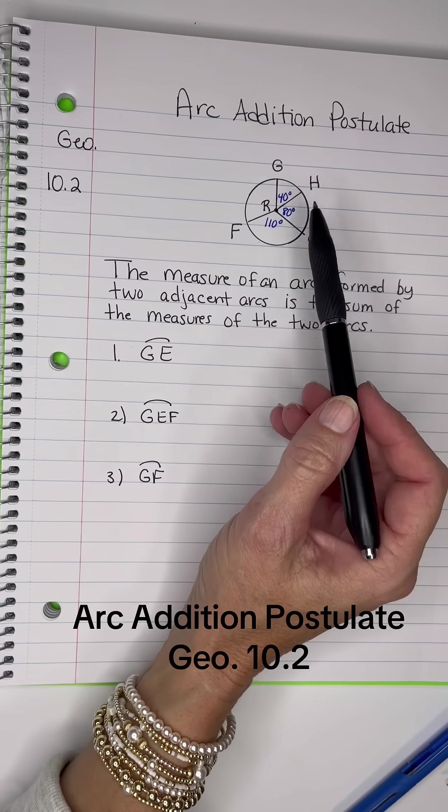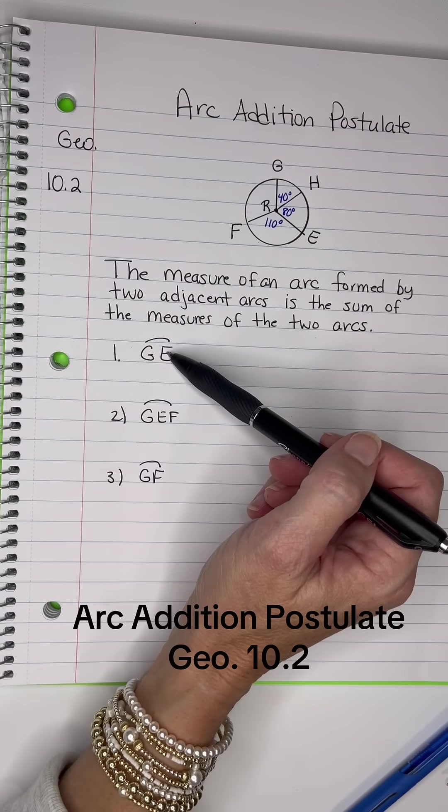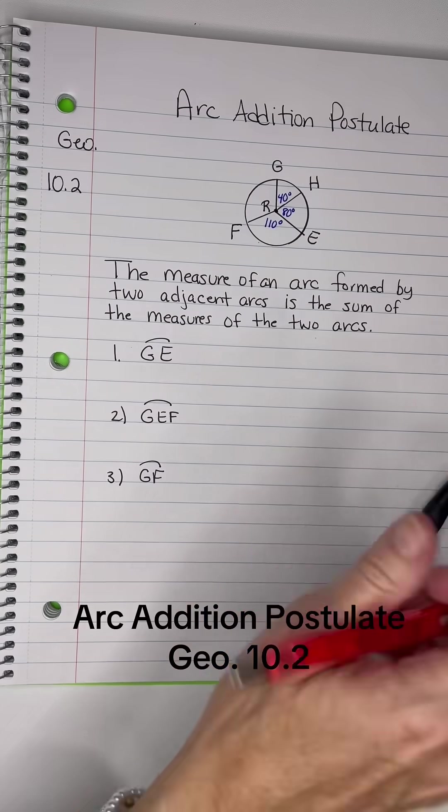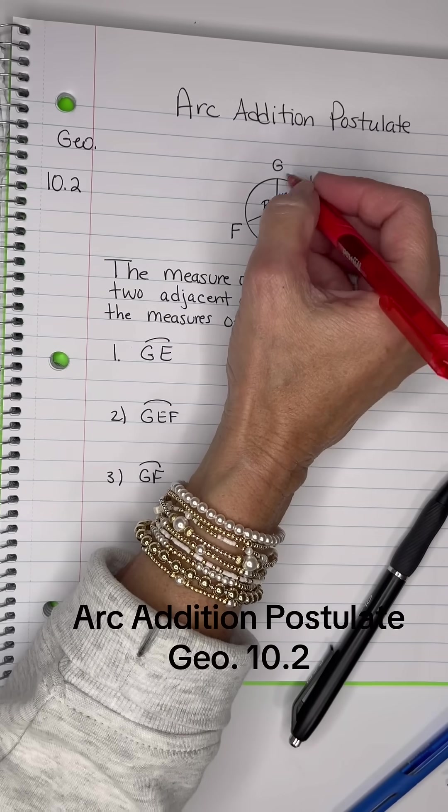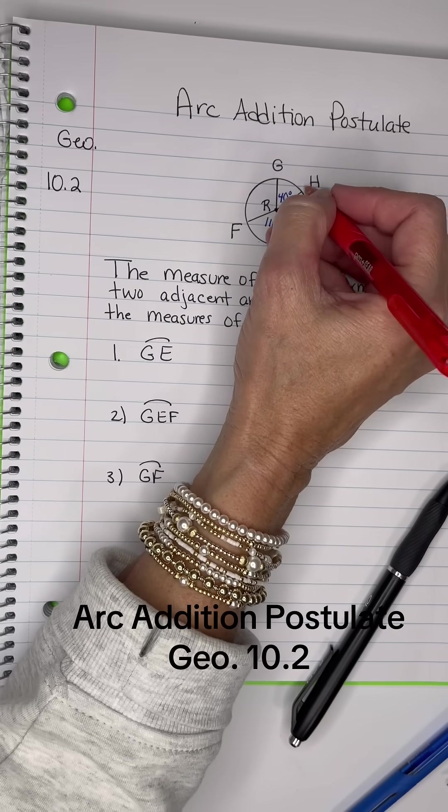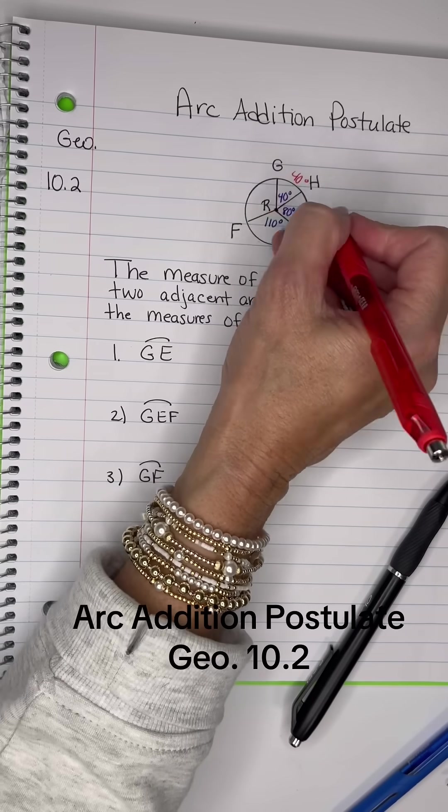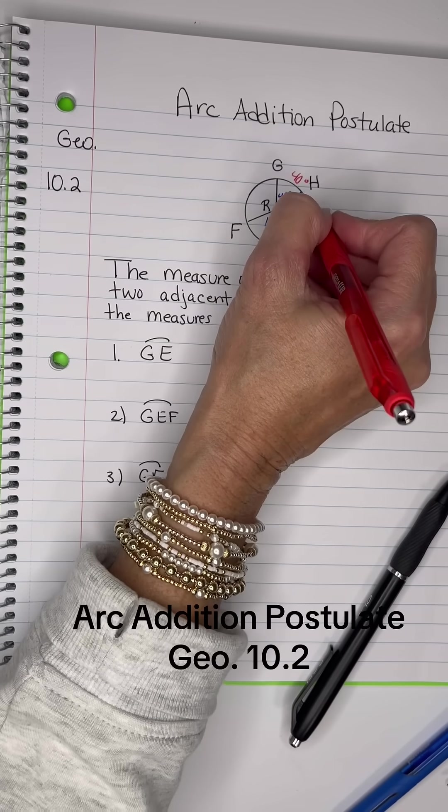If I ask you what is arc GE, all I've got to do is look at the central angles. GE is formed by GH and HE. GH is 40 degrees and HE is 80 degrees.